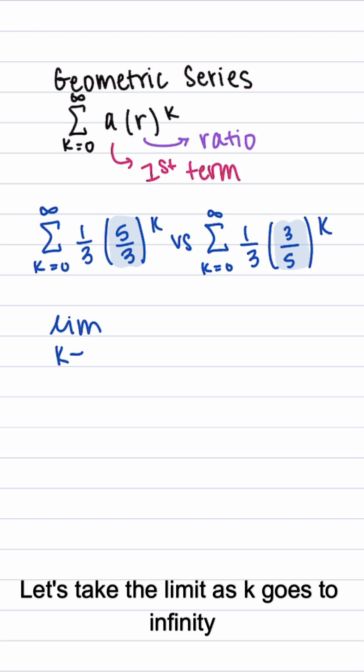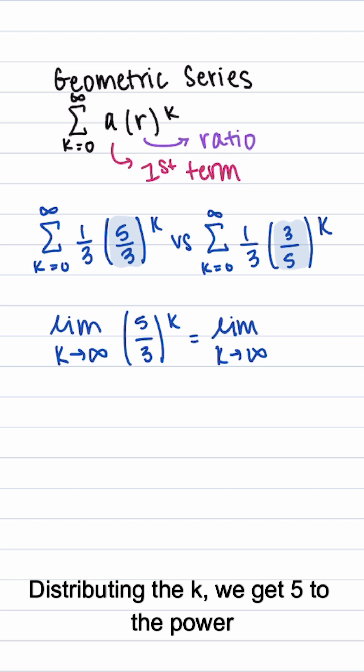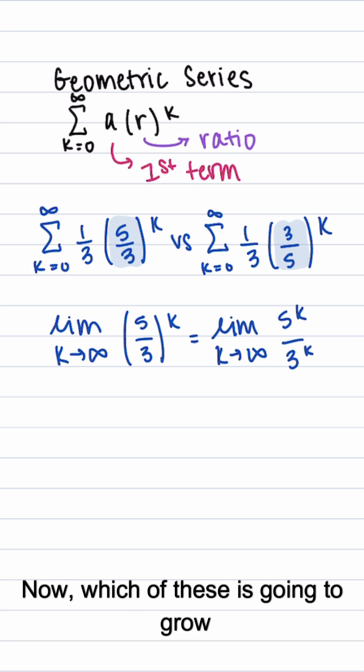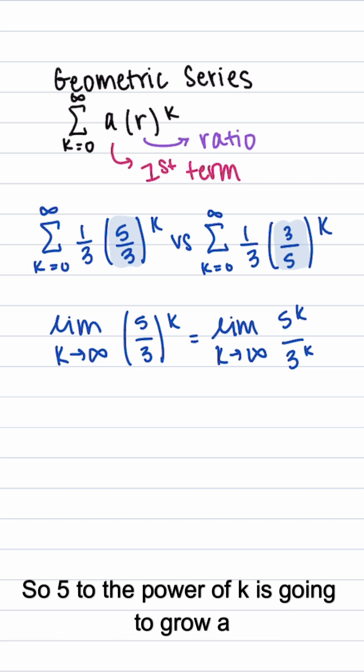Let's take the limit as k goes to infinity of 5 thirds to the power of k. Distributing the k, we get 5 to the power of k divided by 3 to the power of k. Now which of these is going to grow faster? Well, 5 is larger than 3, so 5 to the power of k is going to grow a lot faster than 3 to the power of k, meaning this limit is going to go to infinity.